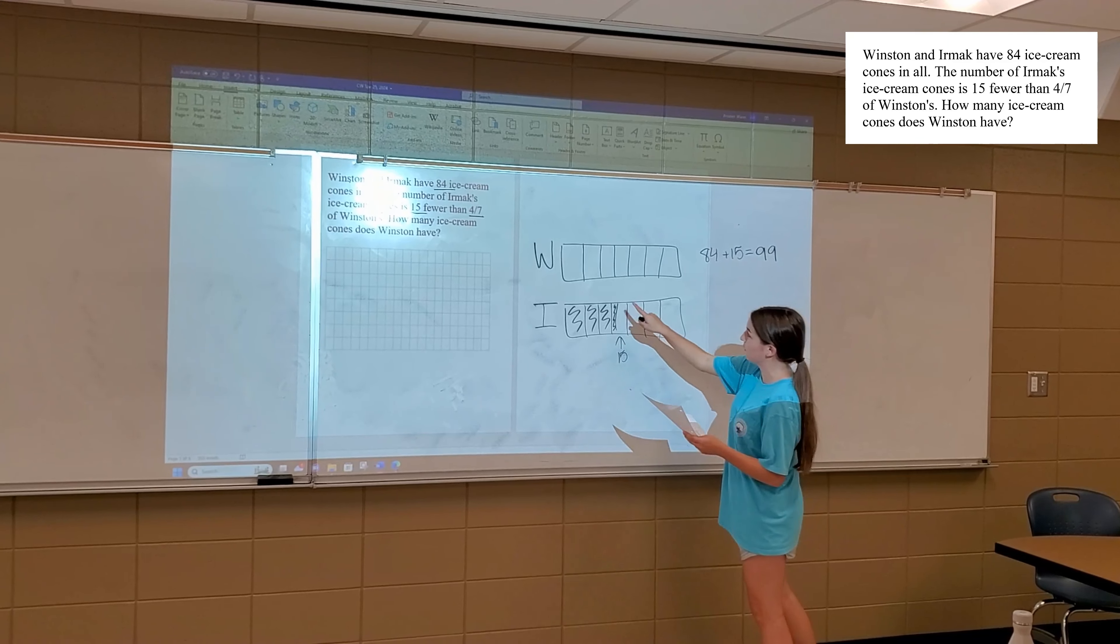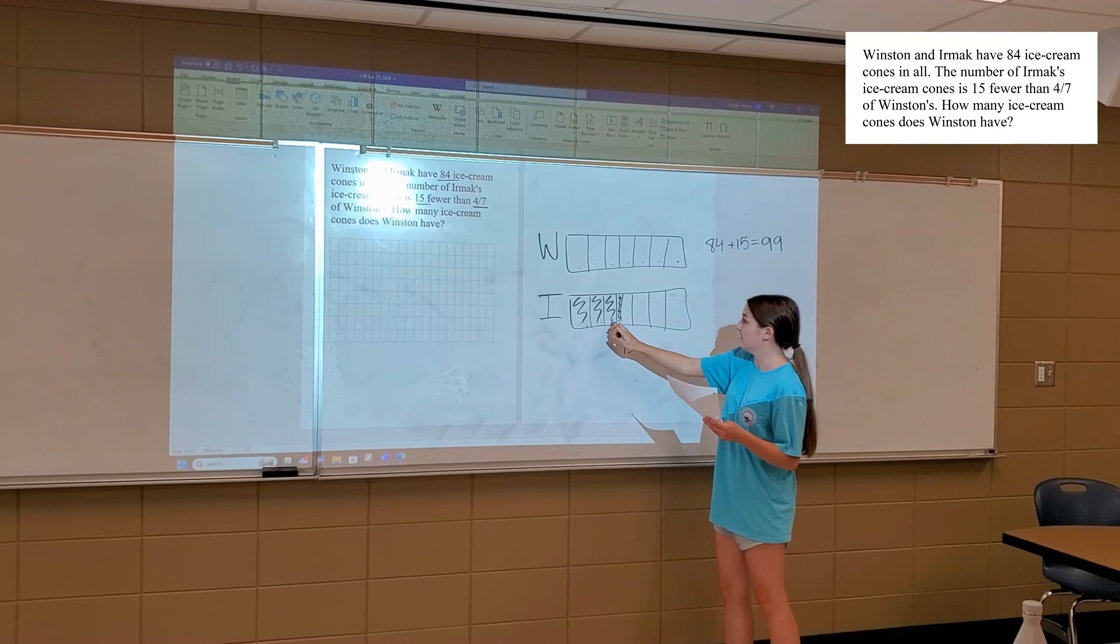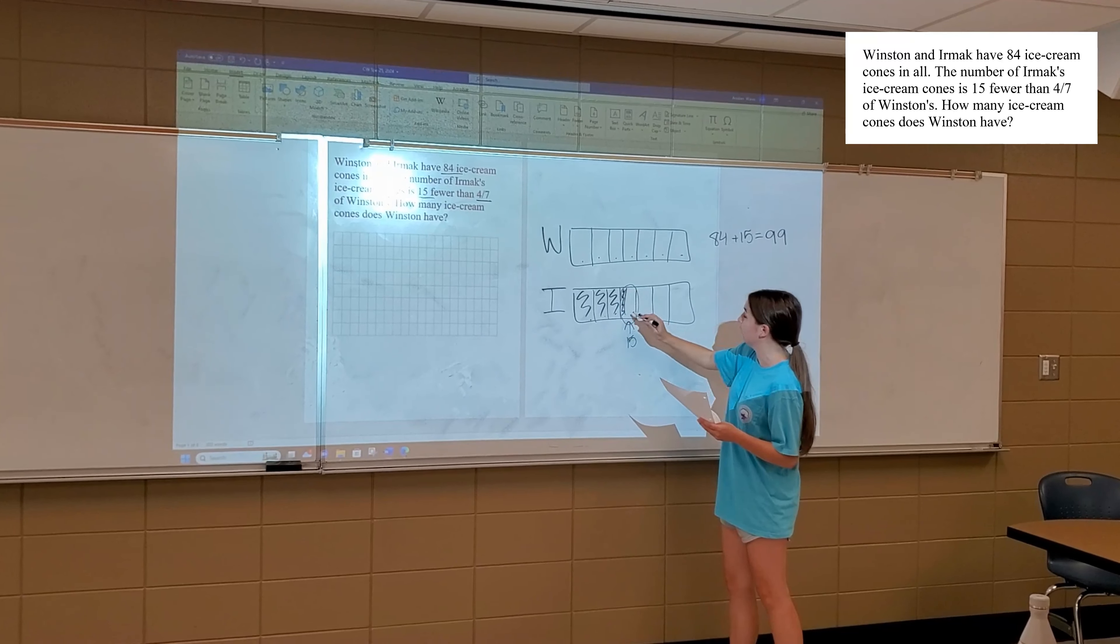Then we count how many squares we have in total. So it's one, two, three, four, five, six, seven, eight, nine, ten. And then this one has now become our 11th square.